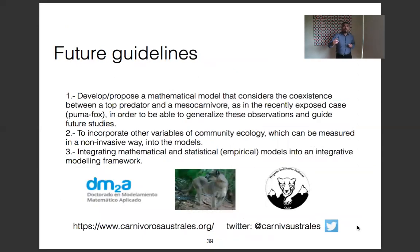Our future efforts are focused on the following: develop and propose the mathematical model that considers the coexistence between the top predator and mesocarnivore in the recently exposed case, puma and fox, in order to be able to generalize this observation for future studies. To incorporate other variables of community ecology which can be measured in a non-invasive way into the model. Integrate mathematical and statistical models into an integrative modeling framework.